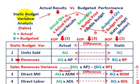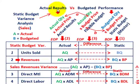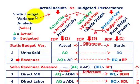What we're going to be going over here is a static budget variance analysis, and this is where we really compare our actual results for the period versus some budgeted performance that we have. So we're just looking at it in basic terms here, and we can look at it in terms of sales.